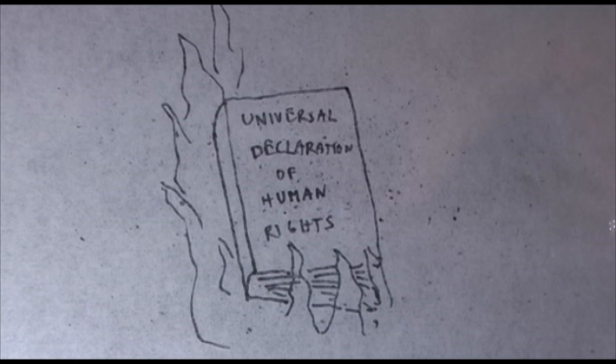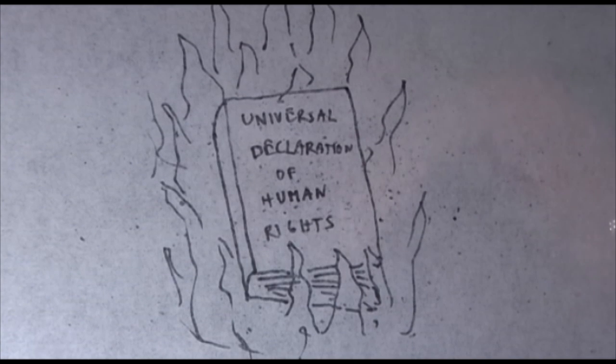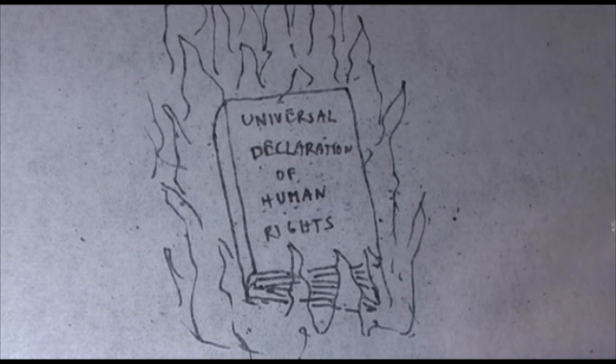Hardin says in his article that if we love the truth, we must openly deny the validity of the Universal Declaration of Human Rights, even though it is promoted by the United Nations. He says that no technical solution can rescue us from the misery of overpopulation. Freedom to breed will bring ruin to all. The only way is by relinquishing the freedom to breed and that very soon. Only so can we put an end to this aspect of the tragedy of the commons. Do you agree with such a radical solution?